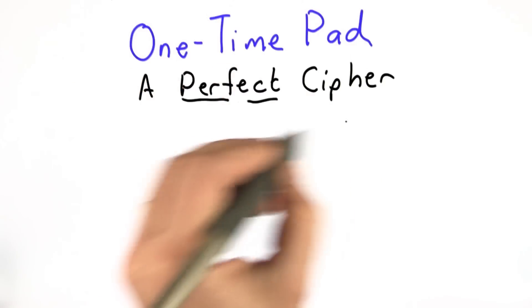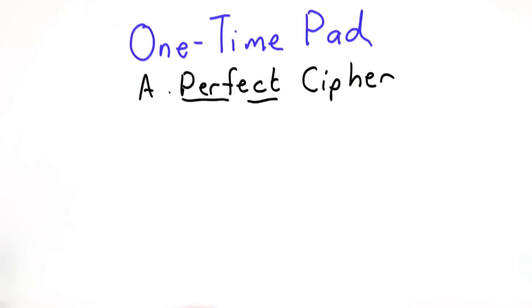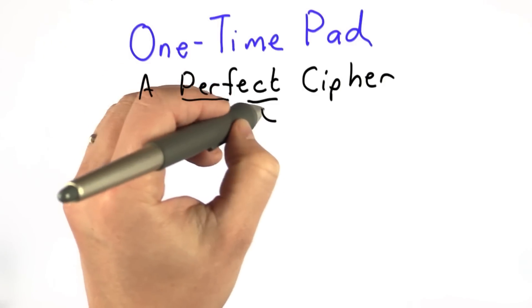And it's actually the only one. You might be wondering, well, if we're starting right at the beginning of the class with a perfect cipher, what's there left to do? It's perfect, but it's very impractical.